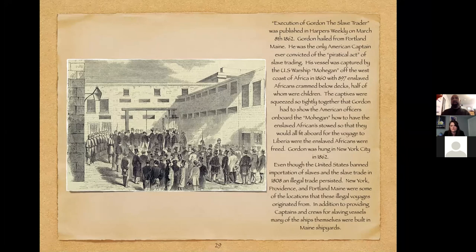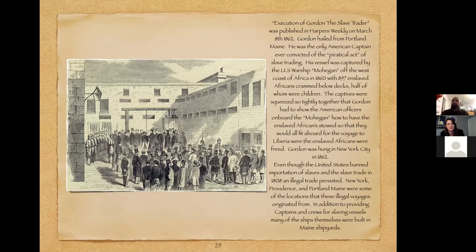Sarah: Did abolitionists in the 19th century call out how implicated Maine was in the trade and labor of enslaved people, and was there pushback? Seth: Certainly there was pushback. In Portland in 1836 and again in 1847, there were anti-abolition riots where Frederick Douglass was prevented from speaking at the Quaker meeting house by a crowd that threw rotten fruit at him and shouted him down.